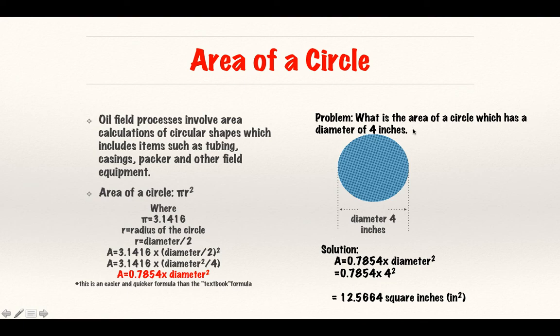What is the area of a circle which has a diameter of 4 inches? The solution is 0.7854 times diameter squared, which gives me 12.5664 square inches. Simple, easy peasy, we can move on to the next topic.